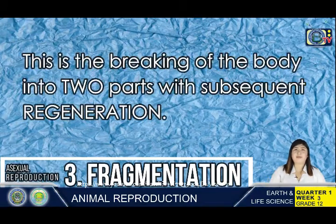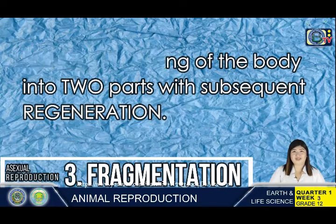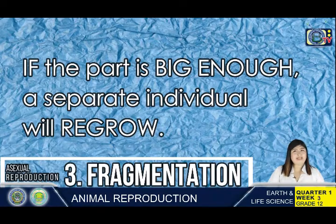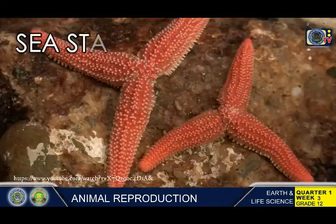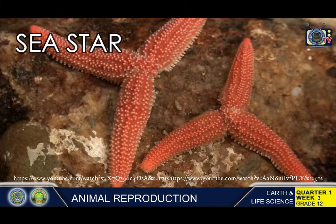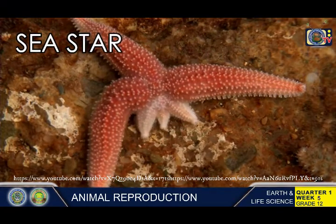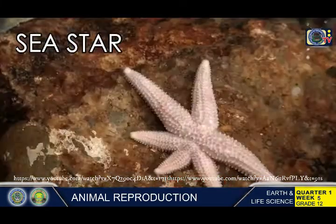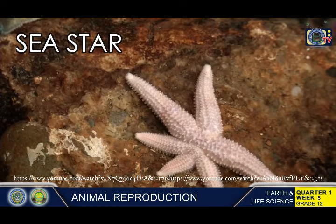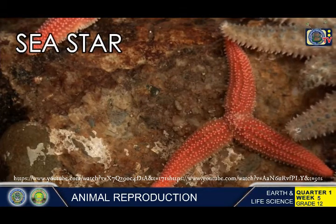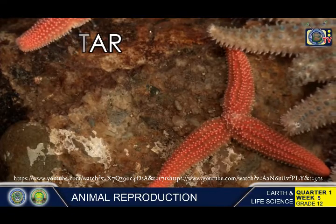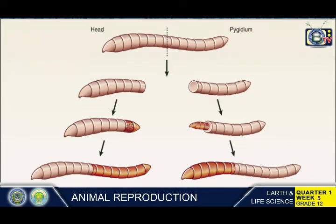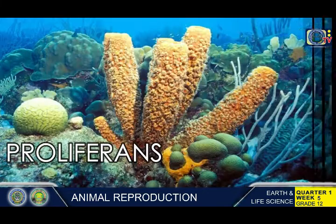Fragmentation is the breaking of the body into two parts with subsequent regeneration. If the animal is capable of fragmentation and the part is large enough, a separate individual will regrow. Many sea stars reproduce asexually by fragmentation — for example, if the arm of an individual sea star is broken off, it will regenerate into a new sea star. Fragmentation also occurs in annelid worms, tubularians, and proliferans.